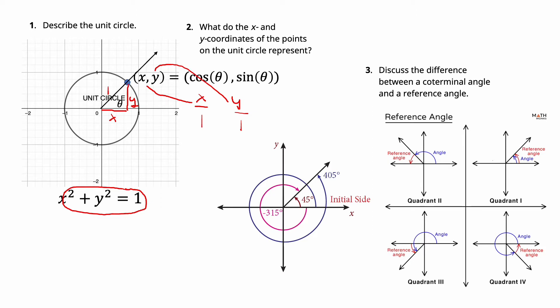A reference angle is a bit more specific. The reference angle measures the angle from the x-axis to the terminal side, but the angles are always between 0 and 90 degrees — you're never going to have a reference angle greater than 90. So in quadrant 1 you have any angle in here, quadrant 2 again this one, quadrant 3 down here, quadrant 4 like that.